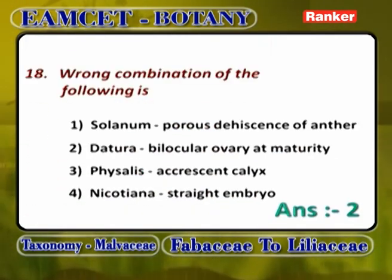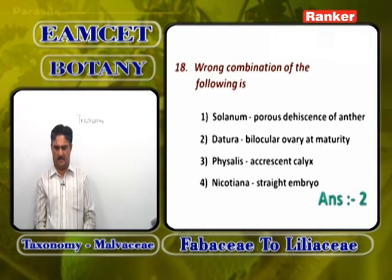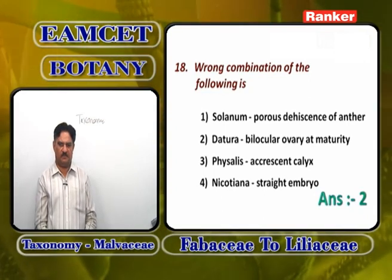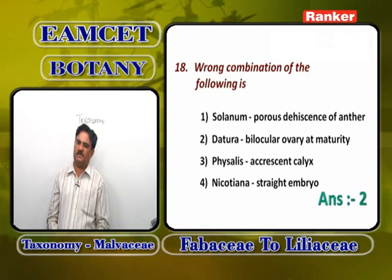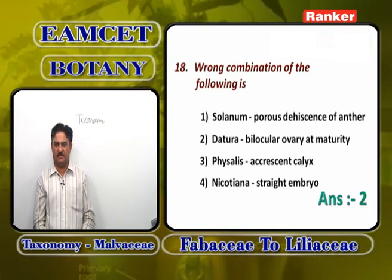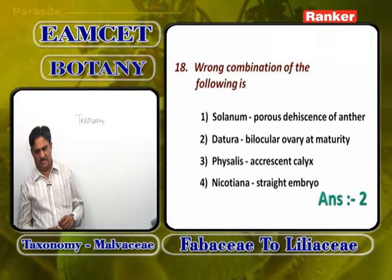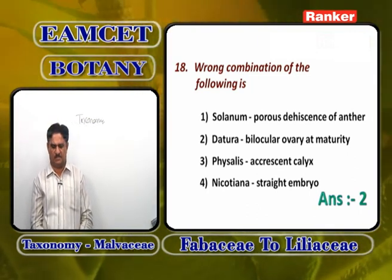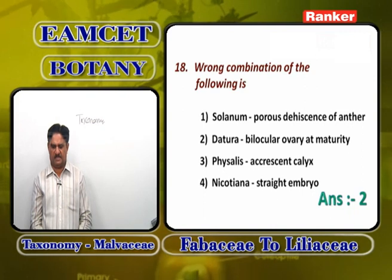Wrong combination question: Solanum porosum — dehiscence by pores is correct. Physalis — accrescent calyx where sepals persist and cover the fruit like inflated skin is correct. Nicotiana — straight embryo is correct. Datura — bilocular ovary at maturity is wrong. Datura forms a false septum so the ovary becomes tetralocular. So Datura becoming bilocular ovary is wrong. Answer is 2.